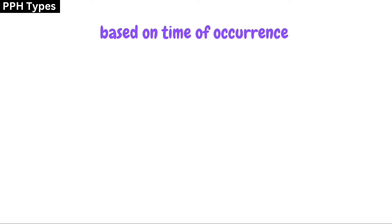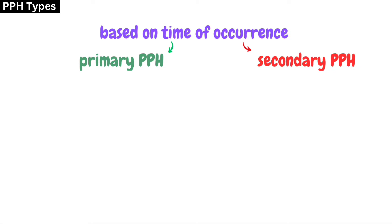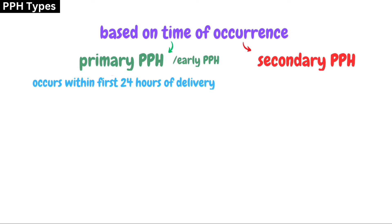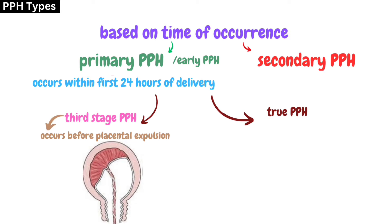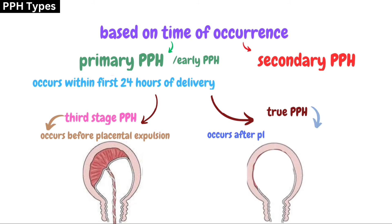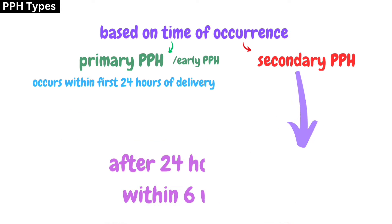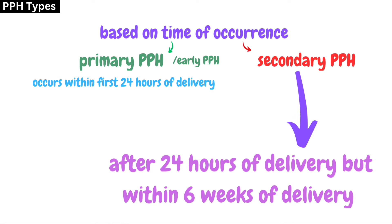Depending on the time of occurrence, PPH is classified as primary and secondary. Primary PPH occurs within 24 hours of delivery, and is further classified into two types: third-stage PPH, where bleeding occurs before expulsion of the placenta, and true PPH, where hemorrhage occurs after expulsion of the placenta but within the first 24 hours. Secondary PPH occurs 24 hours after delivery but within the first six weeks.